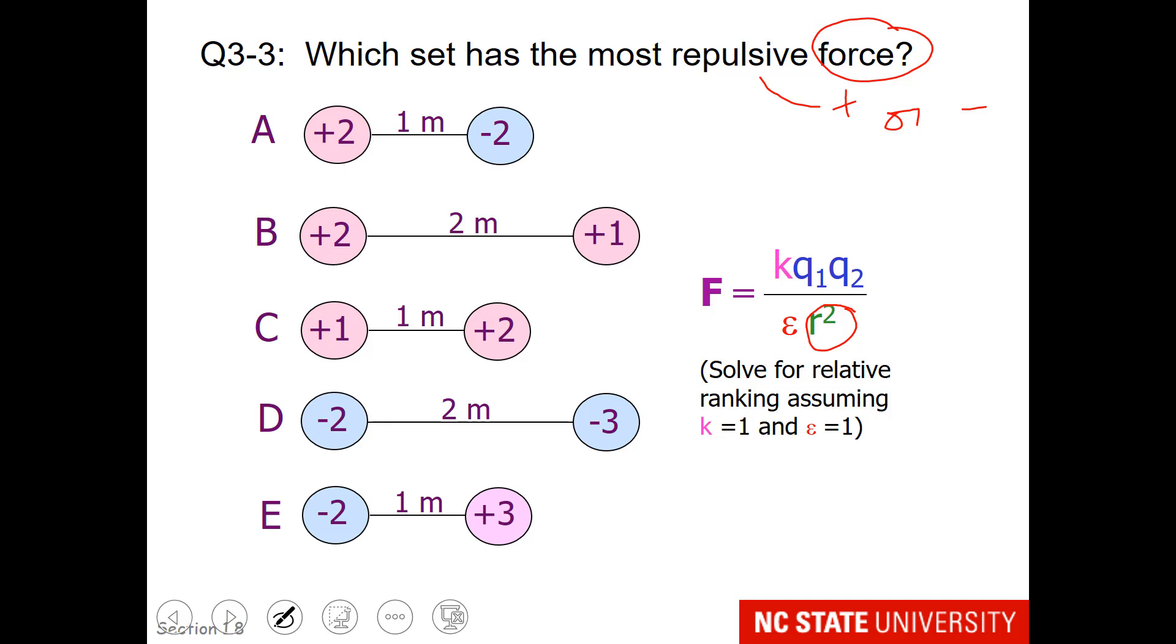So just to get you started on the relative ranking, the first one won't be any different, because it will be plus 2 times a minus 2 over 1 squared. Well, that's still minus 4. That didn't change anything.